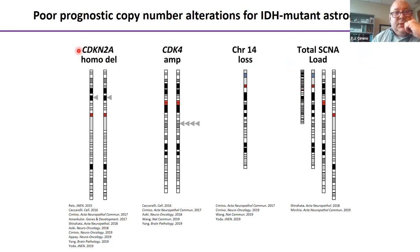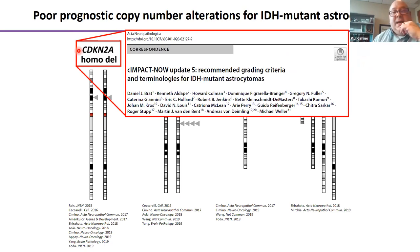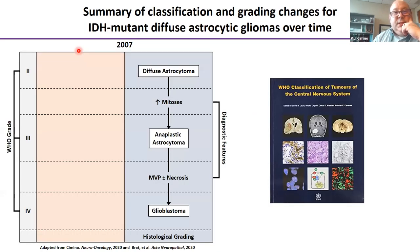Summarizing prognostic copy number alterations: CDKN2A homozygous deletion, CDK4 amplification, chromosome 14 loss, and total somatic copy number alteration load have been shown as strong markers for poor survival in IDH mutant astrocytomas. CDKN2A homozygous deletion has the most evidence. cIMPACT update 5 recommended incorporating this as a marker for grade 4 in IDH mutant astrocytomas, and we and others have begun incorporating it into our stratification and diagnostic strategies.